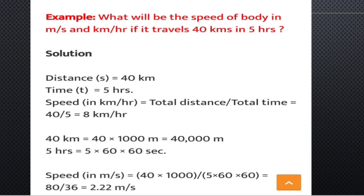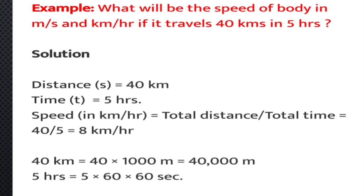Now let's do a numerical. The question is: what will be the speed of the body in meters per second and kilometers per hour if it travels 40 kilometers in 5 hours? Distance is 40 km, time is 5 hours. Speed equals distance by time, so 40 divided by 5 equals 8 kilometers per hour.